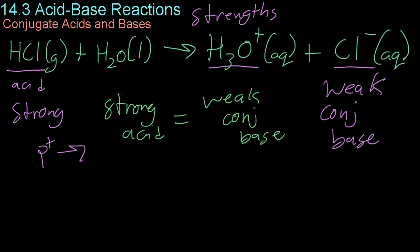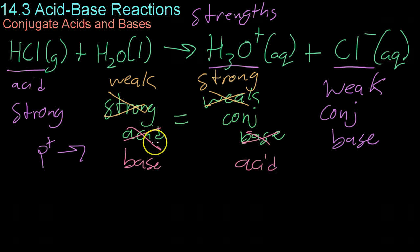Likewise, if you were to have a weak acid, the reaction would be very reversible and you would have a strong conjugate base that could take on the hydrogen ions again. And the same is true of bases and their conjugate acids. All it is is it depends on which side of the equation you have as the products versus the reactants.